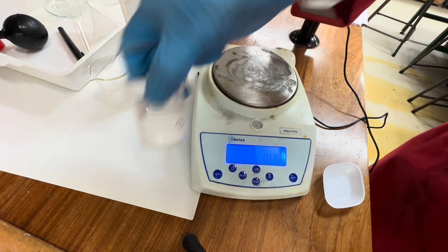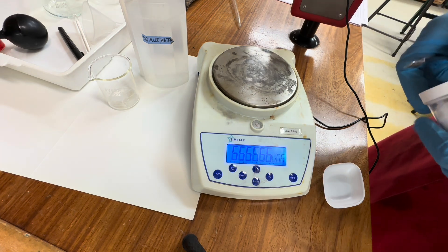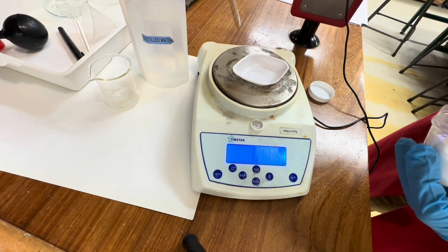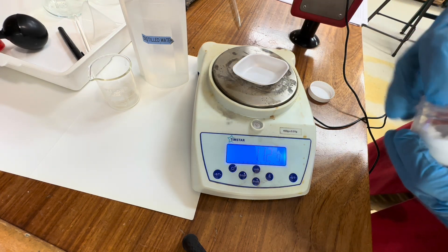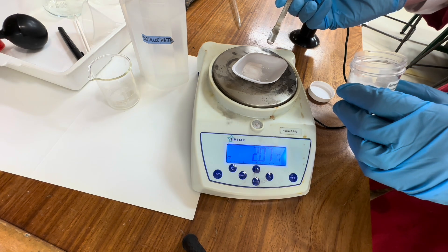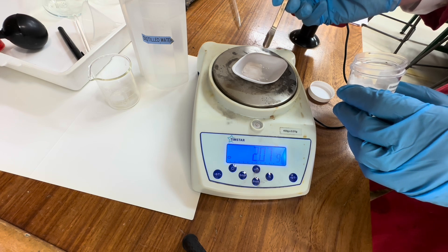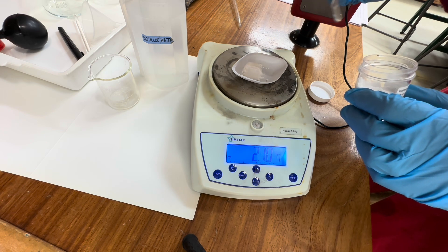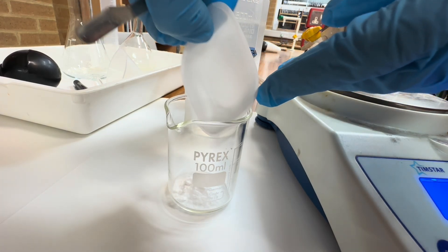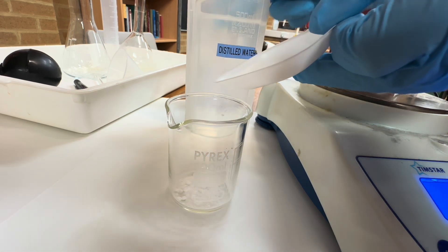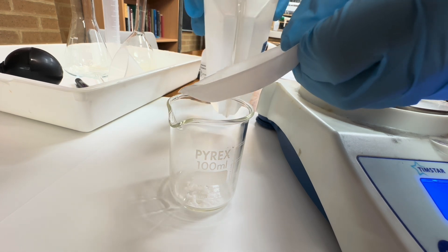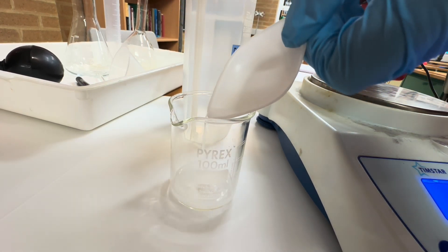We can measure 2.1 grams of sodium hydrocarbonate and now we must place this in a clean dry beaker. We must ensure that all of the sodium hydrocarbonate has gone into the beaker, so we'll rinse it with some distilled water to make sure that we do not lose any.